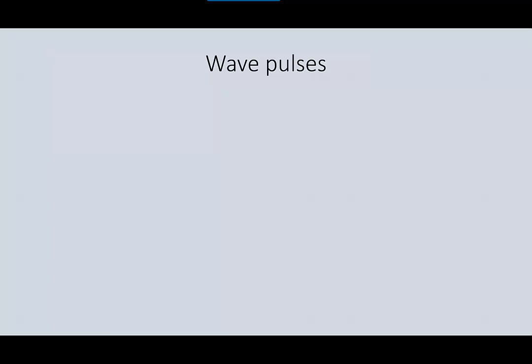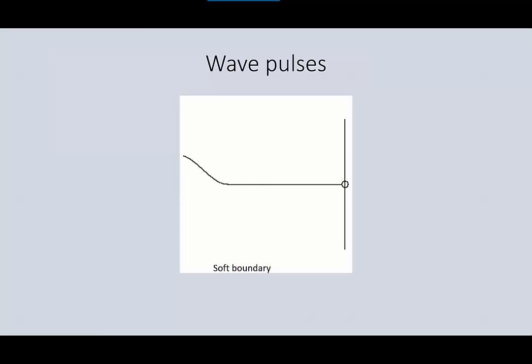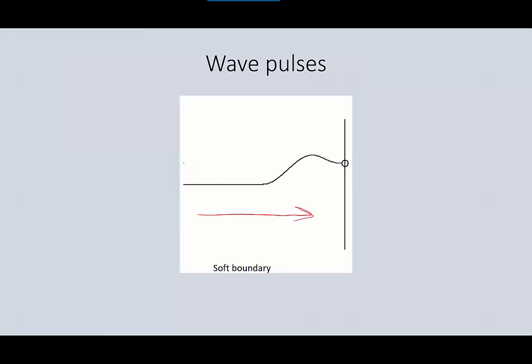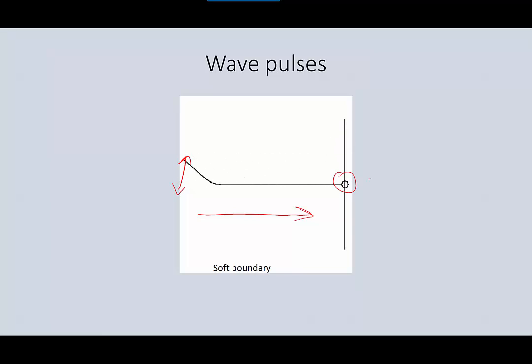Let's talk about a wave pulse first. Let's say that we have a string attached to a pole and we are going to send a pulse down it. We have a wave pulse that is formed on the left side and as the energy moves across, the particles in the string are moving up and down. When we get over here, because the string is loosely connected, we have what we call a soft boundary.